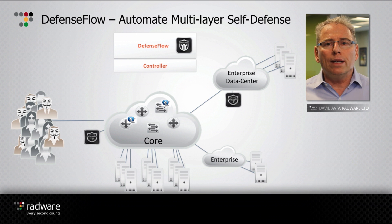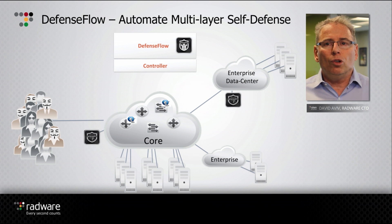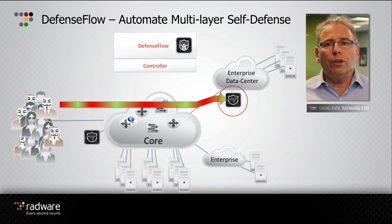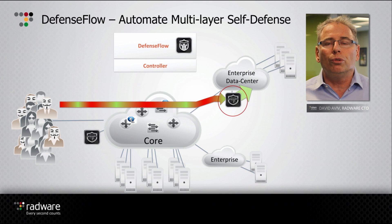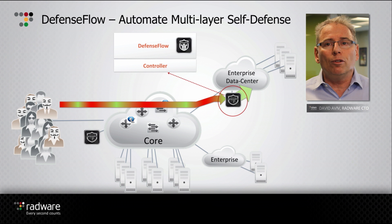Let's understand the way we can automate a self-defensive network utilizing the Defense Flow. In that setup we can see a core network, enterprise network, controllers, and the Defense Flow running on top of the controller via the northbound API. The controller can pick up OpenFlow and NetFlow information, process it, and provide that kind of statistical telemetry to the Defense Flow.